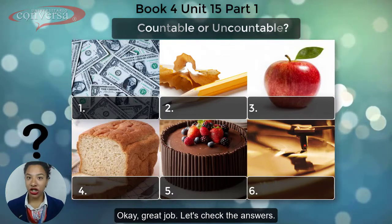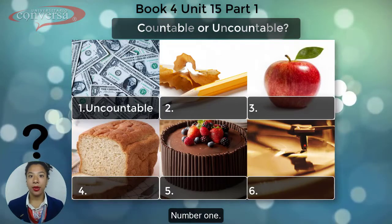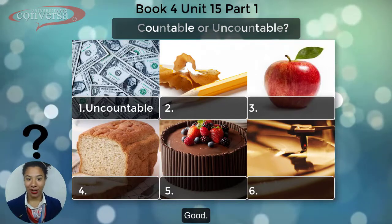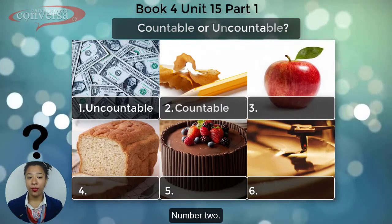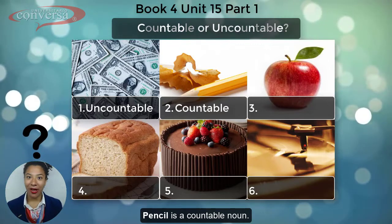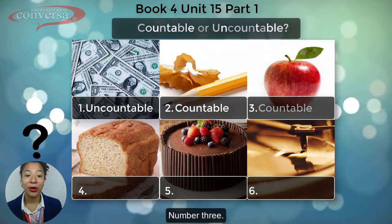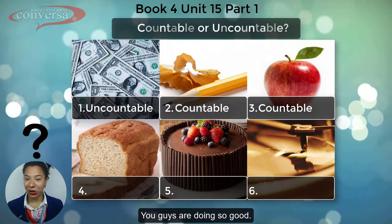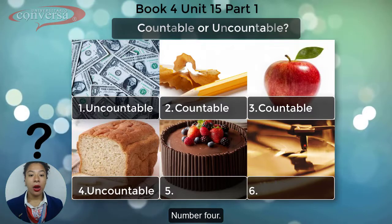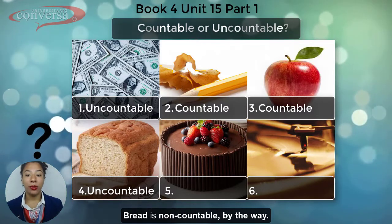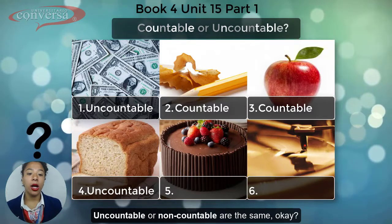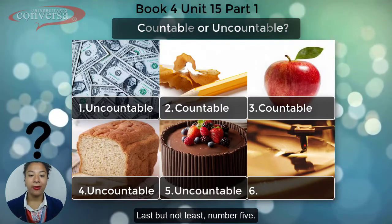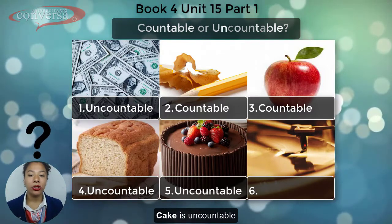Great job. Let's check the answers. Number one: money is an uncountable noun. Number two: pencil is a countable noun. Perfect. Number three: apple is countable as well. You guys are doing so good. Number four: bread is non-countable. By the way, uncountable and non-countable are the same. Number five: cake is uncountable.